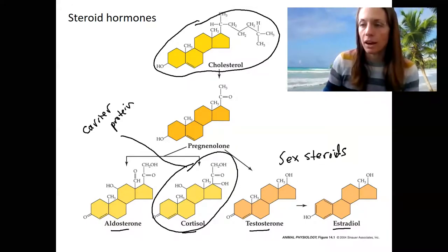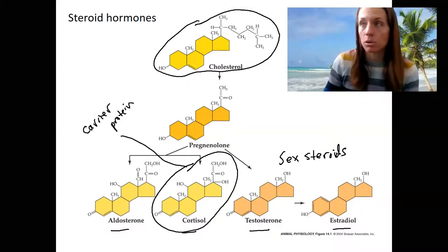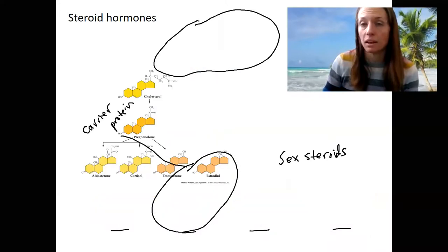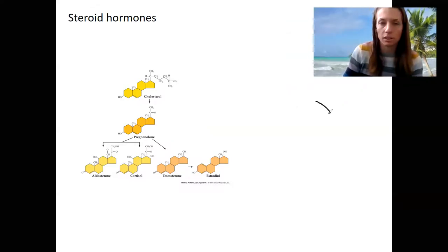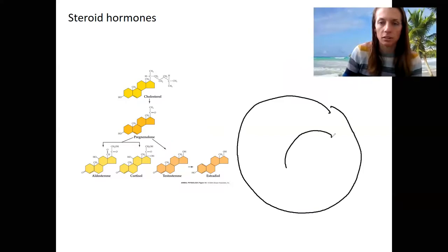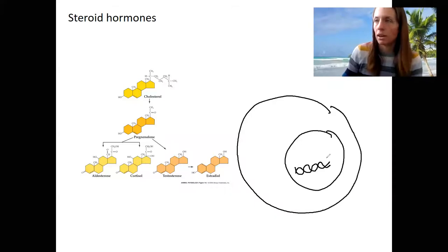So let's look at what these hormones do when they bind to a receptor, and they're going to bind to a receptor inside the cell. So I'm going to draw you a lovely cell that has a lovely nucleus, and of course there's DNA in our nucleus, and let's do a few different colors here.